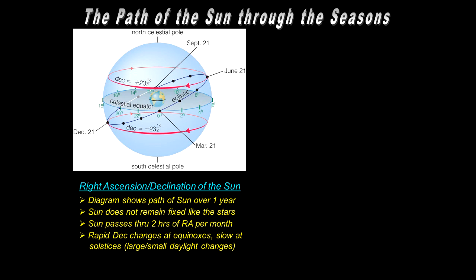In Alaska, during the equinoxes, the amount of daylight change per day is about six minutes at maximum, whereas in the Chicagoland area it is three or four minutes. But at the solstices, you don't notice any change in day length from day to day, hardly at all.